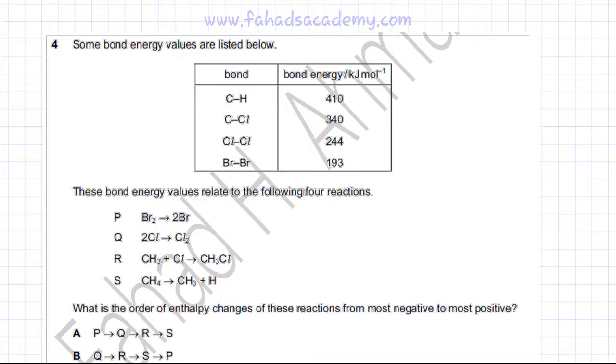The following chemical energetics question is related to bond energies. The question has given some bond energy values listed below, with different bonds and their bond energy values provided. These bond energy values relate to the following four reactions: P, Q, R, and S. The question asks, what is the order of the enthalpy change of these reactions from most negative to most positive?